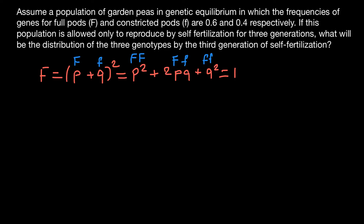Self-fertilization, which is the most severe form of inbreeding, will reduce the frequency of the heterozygotes by one half each generation, with the reduction being equally distributed between the two homozygous genotypes.